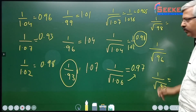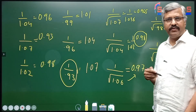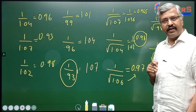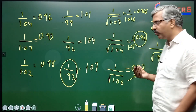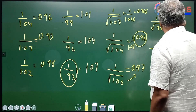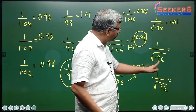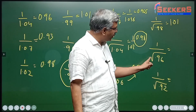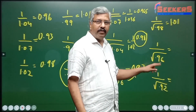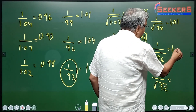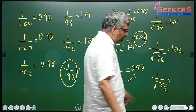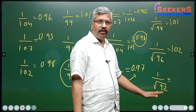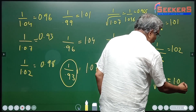Now the same in reverse. This is 0.98, so it is 2 less than 1. When you do square root, half it — 1 less than 1 — so the answer will be 1 more than 1: it will be 1.01. Here again, this is 4 less than 1, so because of the square root 2 less than 1, the answer will be 2 more than 1: it is 1.02. This number again: 8 less than 1, because of the square root 4 — answer should be 1.04.